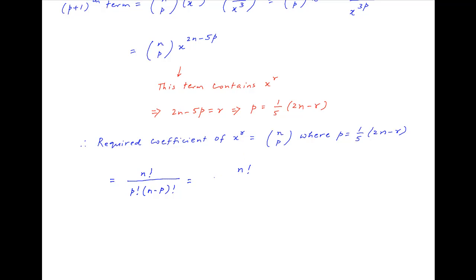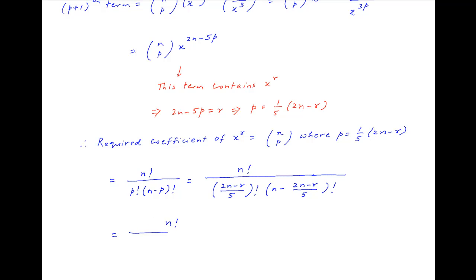Substituting the value of p, we get n factorial divided by ((2n minus r)/5) factorial times ((3n plus r)/5) factorial, which is the required answer.